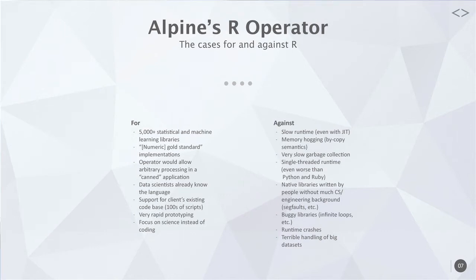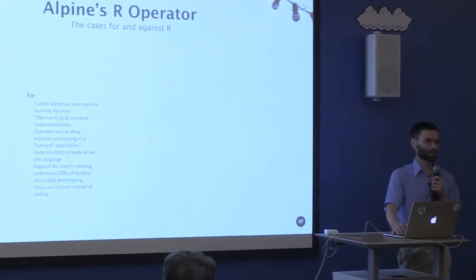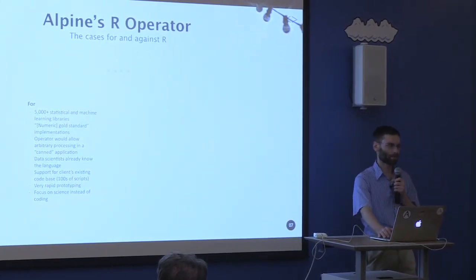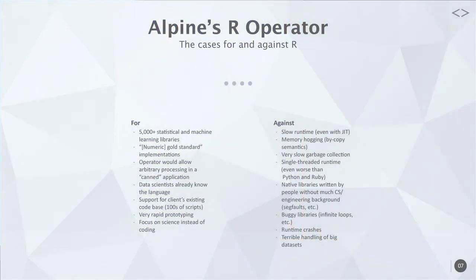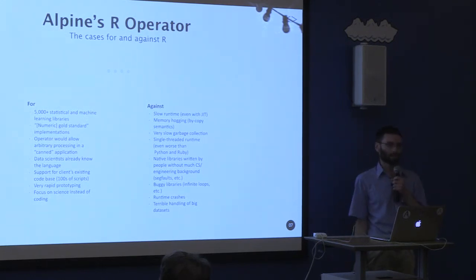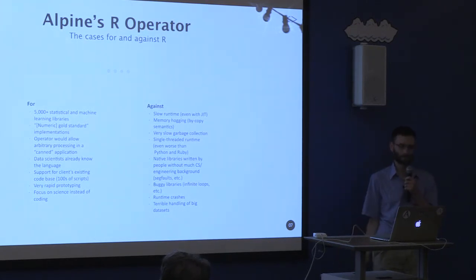What are the cases for and against R? R has 5,000 statistical and machine learning libraries and provides the numeric gold standard for lots of implementations, because the people who published scientific journal articles did their first implementations in R. So unless they had a bug, that would be the default implementation for many new algorithms. It also has a huge community, so bugs are usually detected really early through peer review.